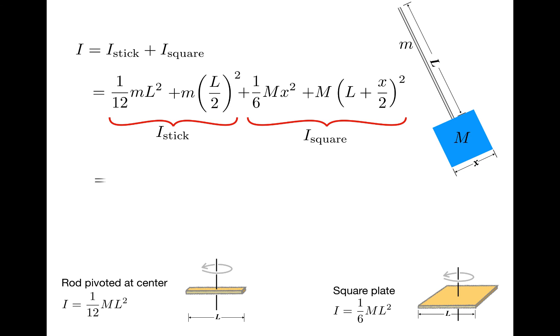The first two terms combine to give one-third ml squared, and there isn't much to be done with the last two, so I'll leave them as is.